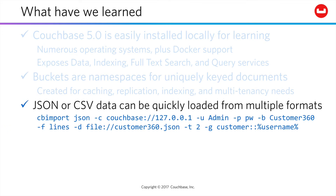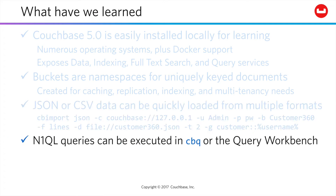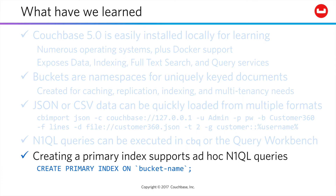You can load JSON or CSV data very quickly into a bucket from multiple formats using the CB Import tool. You might also use a tool called cbdocloader. N1QL queries can be executed either using the command line tool cbq or the query workbench. Lastly, you need to create a primary index to support ad hoc N1QL queries. You might drop it in production because you don't want the maintenance overhead, and you'll have determined the queries you need and created secondary indexes to take their operating speed down to millisecond and microsecond levels.